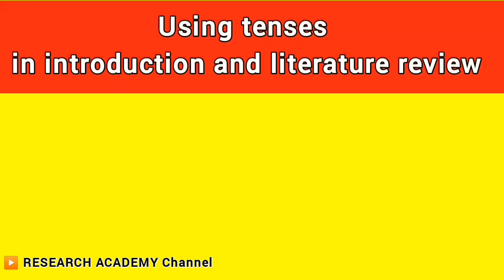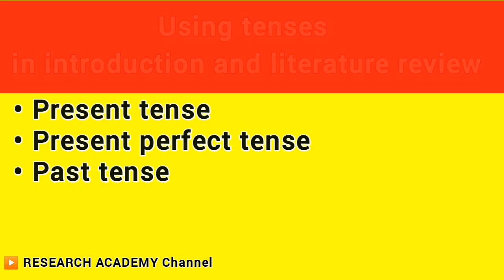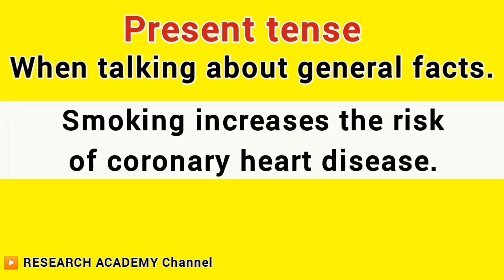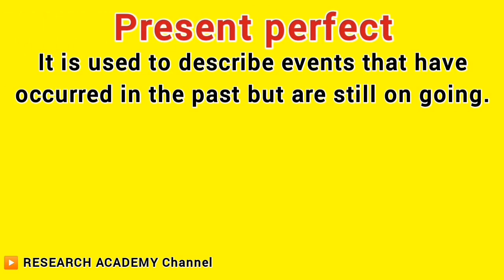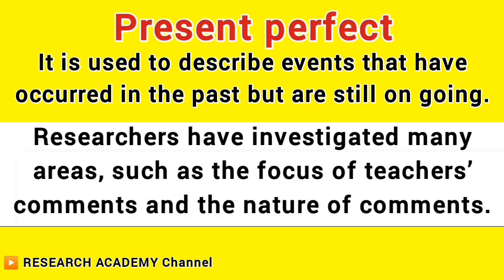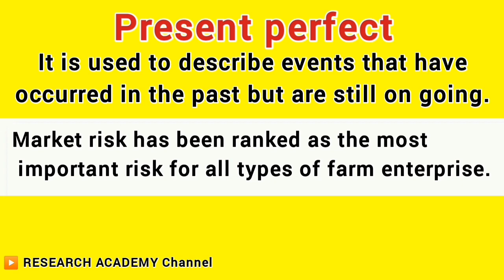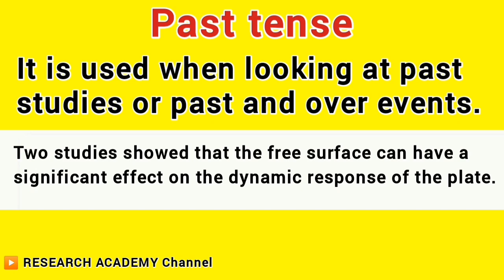Regarding tenses in the introduction and literature review, we use a mixture of several tenses. Present tense is used when talking about general facts — for example, 'Smoking increases the risk of coronary heart disease.' Present perfect tense describes events that have occurred in the past but are still ongoing — for example, 'Researchers have investigated many areas, such as the focus of teachers' comments' or 'Market risk has been ranked as the most important risk for all types of farm enterprise.' Past tense is used when looking at past studies or past events — for example, 'Studies showed that the free surface can have a significant effect on the dynamic response of the plate.'